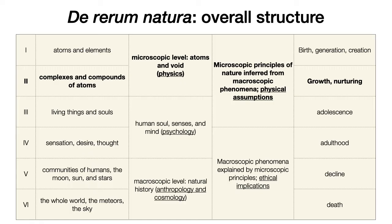To remind you of where we are in the overall structure of the poem: Lucretius in book 1 had established the existence of atoms and void space in an infinite cosmos and an infinite plurality of worlds or cosmos within the universe. In this book he discusses how those atoms move around in the void and combine to form complexes and compounds that create the visible and sensible bodies that we see all around us.